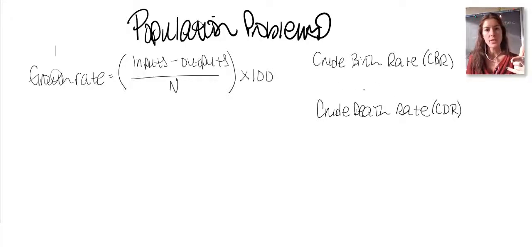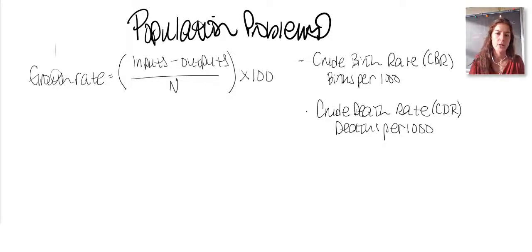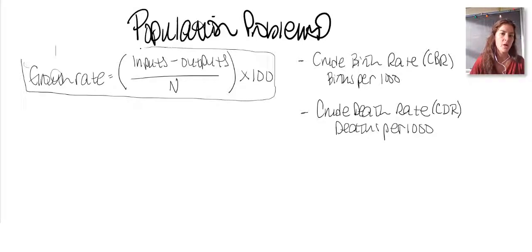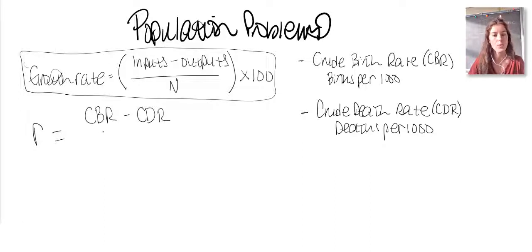CBR and CDR represent the number of births or deaths that occur in a year for every 1,000 people living in that country. In some problems, CBR and CDR will be given to you; in others, you'll have to calculate them. We can simplify the growth rate formula: if you have CBR and CDR, then growth rate (r) equals CBR minus CDR — you don't divide by N, because those numbers already account for 1,000 individuals.